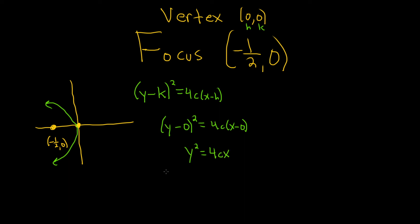So we're almost done. We just have to find the value of c. So the distance between 0 and -1/2 is 1/2. The absolute value of c is always equal to that. So the distance between the vertex and the focus is always the absolute value of c. Now here's the key. Because it opens left, c is less than 0. So that means c must be equal to -1/2. If it opens right, c is positive.